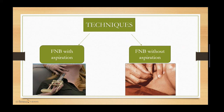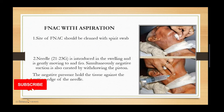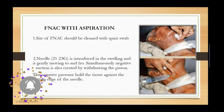There are two techniques: with aspiration and without aspiration. With aspiration, a needle and syringe are used; without aspiration, only the needle is used. For FNAC with aspiration, the site is cleaned with a spirit swab, the needle is introduced into the swelling and moved gently to and fro, while simultaneously negative suction is created by withdrawing the piston. The negative pressure holds the tissue against the cutting edge of the needle.